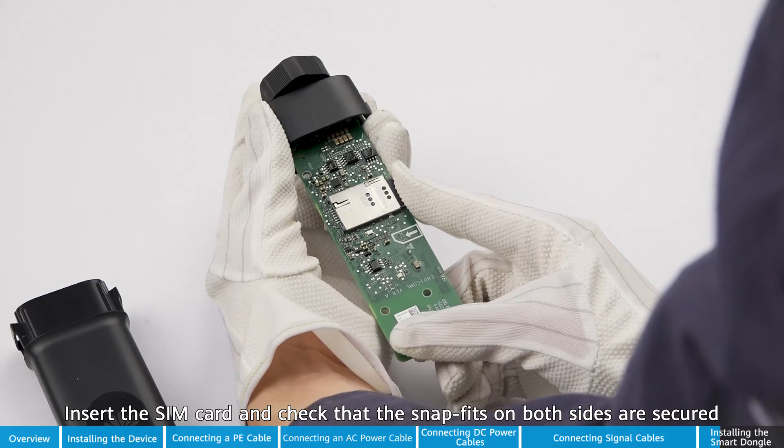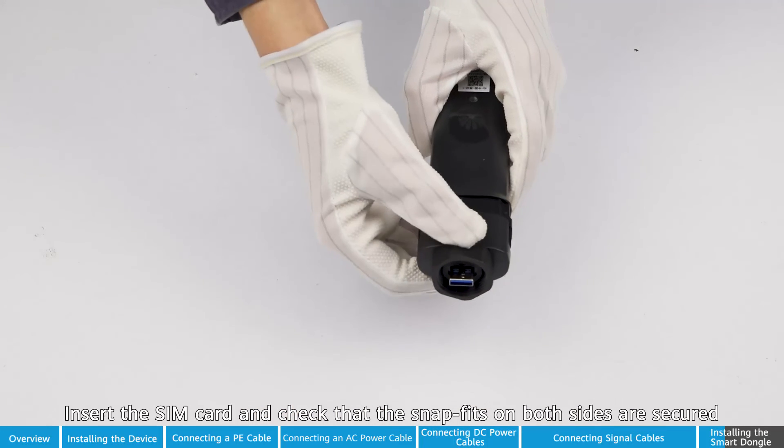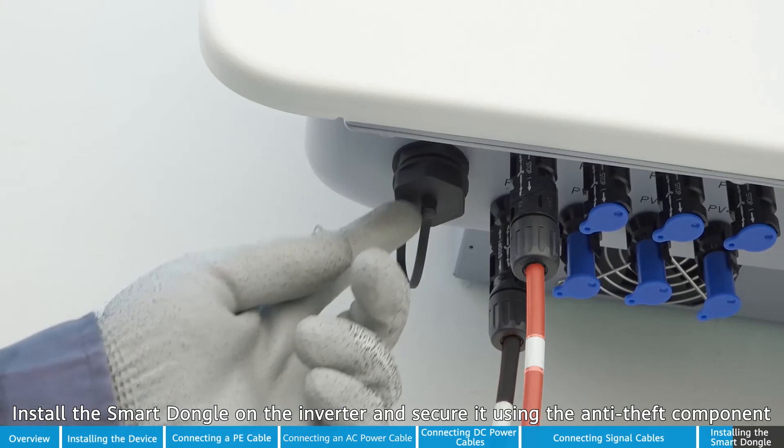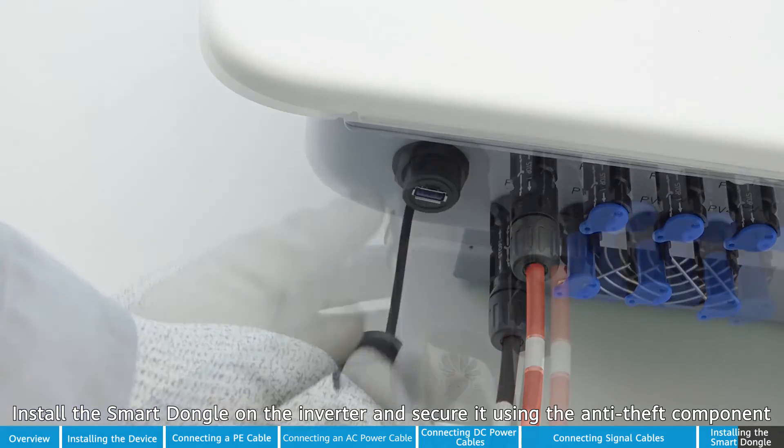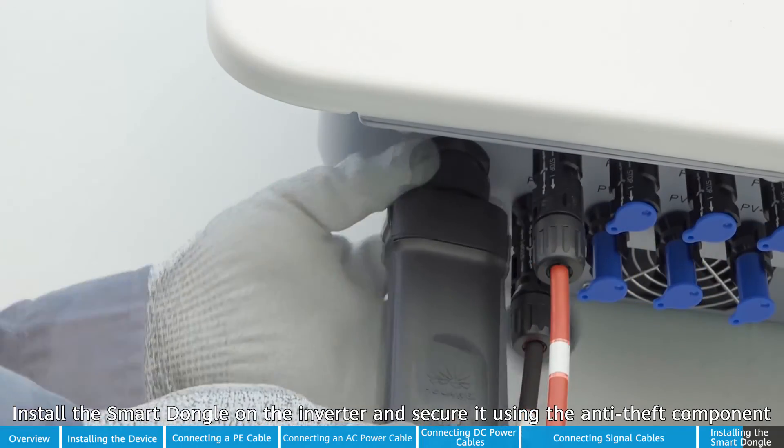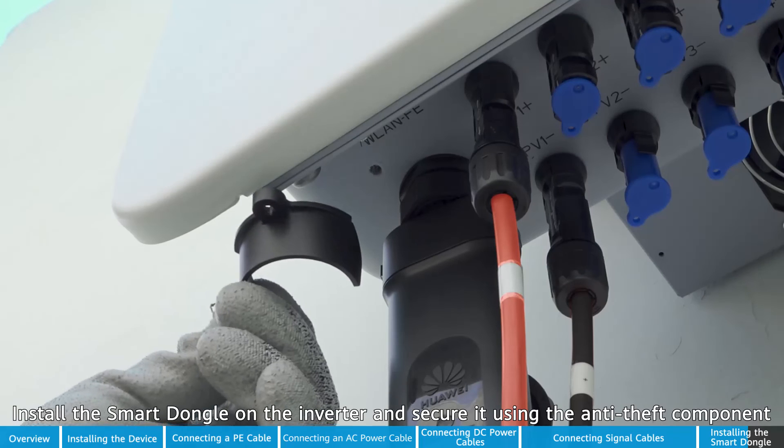Insert the SIM card and check that the snap fits on both sides are secured. Install the smart dongle on the inverter and secure it using the anti-theft components. Power on the system.